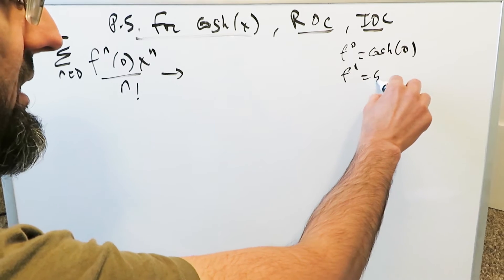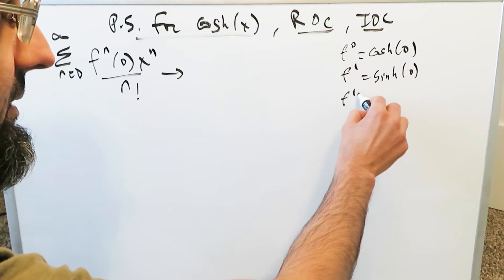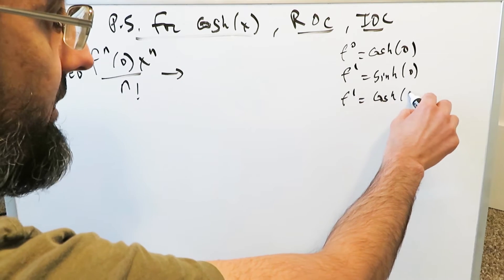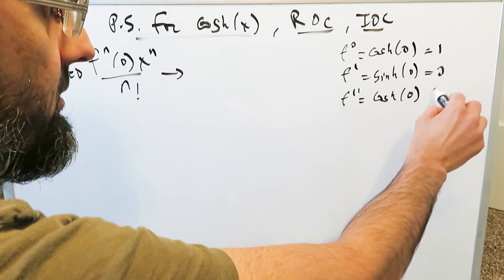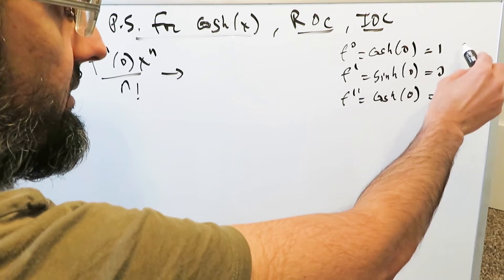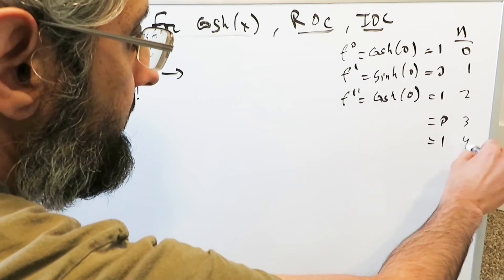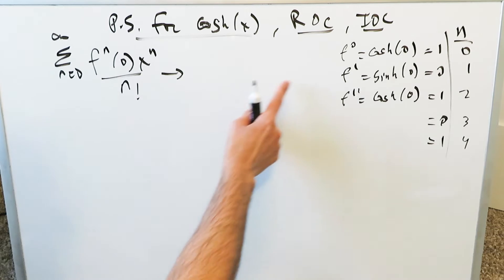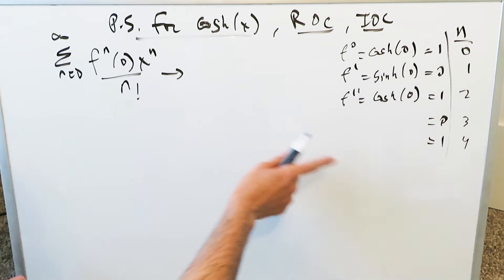The first order derivative gives hyperbolic sine evaluated at 0. The higher order derivatives for these functions just keep shuffling back and forth. At n equals 0: cosh(0) = 1. At n equals 1: sinh(0) = 0. At n equals 2: cosh(0) = 1. At n equals 3: sinh(0) = 0. At n equals 4: cosh(0) = 1. With n values 0, 1, 2, 3, 4, we can breeze through and develop the series.